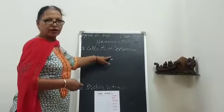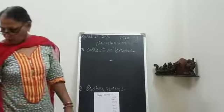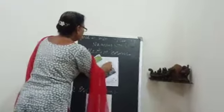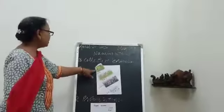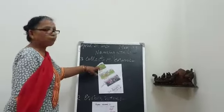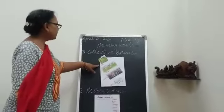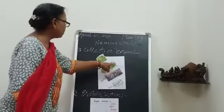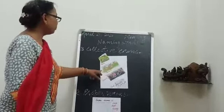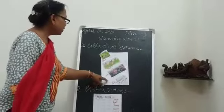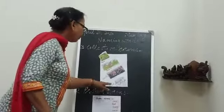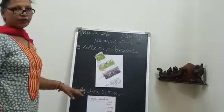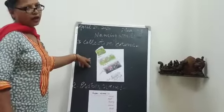Collective noun also describes a group. For example, team is a collective noun because a group of players is there. A group of goats is called a tribe. A group of people is called a crowd. A group of sparrows is called a flock. Class is a collective noun because a number of students are present in the class.